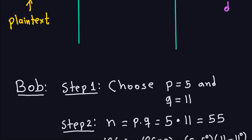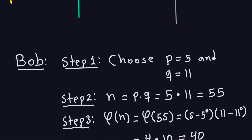Step 1: Bob chooses two primes p and q that need to be large. Because this is an example I can't give really large primes — concentrate on the steps. Bob chooses p = 5 and q = 11. These are not the real large primes you'd use in practice, but for the sake of this example we use small primes. Step 2: compute N = p*q = 5 * 11 = 55.